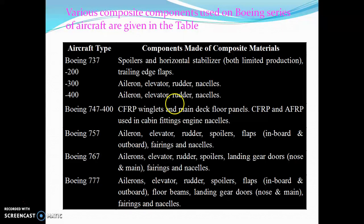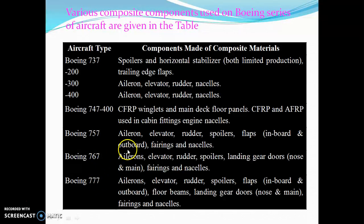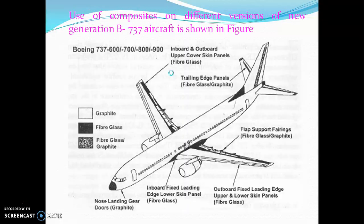Various composite components are also used in the Boeing series of aircraft, including the 737 (variants 200, 300, 400), 747, 767, and 777. Some components in these aircraft are made from composite materials. For the Boeing B737 series, inboard and outboard upper cover skin panels use fiberglass, and the leading edge panels use glass fiber or graphite.